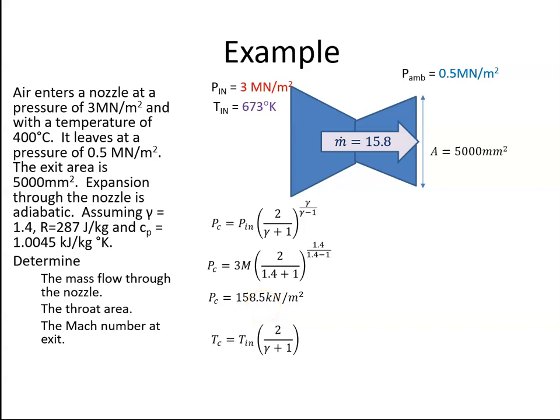We can also get the critical temperature, which is 641 K, using the temperature at the inlet. If I have the critical temperature, I can get the speed of sound at that station. The speed of sound is √(γRT_c). Plug in the values, and I get the speed of sound to be 507 m/s. That's the velocity—the air is traveling at the speed of sound right here at the throat.